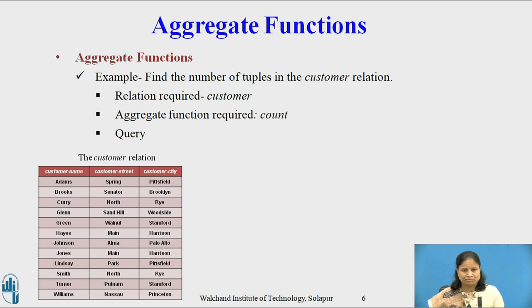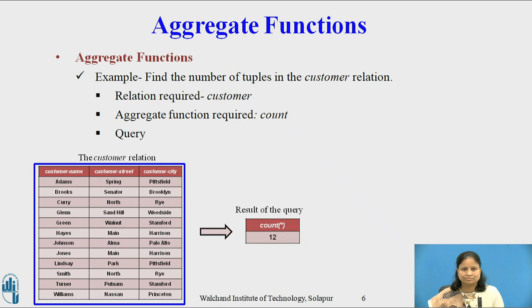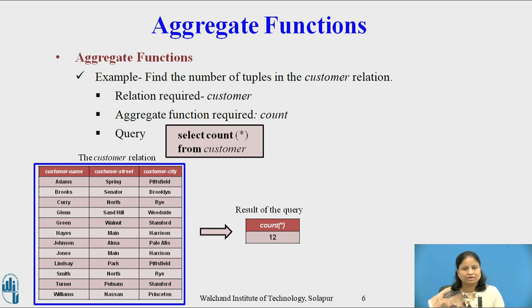Second example: find the number of tuples in the customer relation. The relation required is Customer and the aggregate function required is Count. The aggregate function Count is applied to the relation Customer, and the result contains the number of tuples in the relation Customer, which is 12. The query is: SELECT COUNT(*) FROM customer.